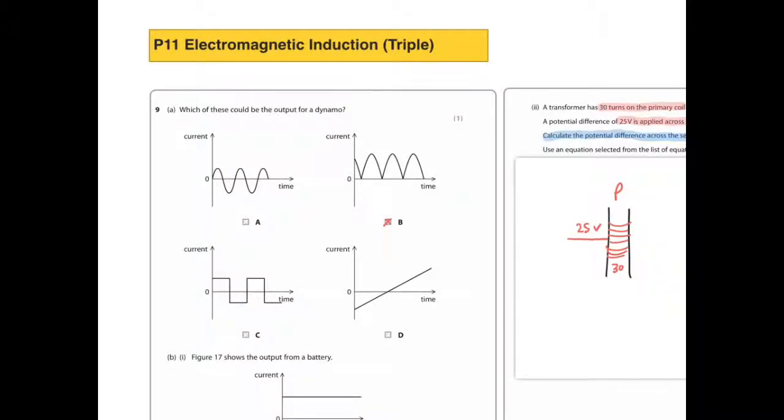Which of these could be the output for a dynamo? A dynamo is a direct current source, so the current is only in one direction.